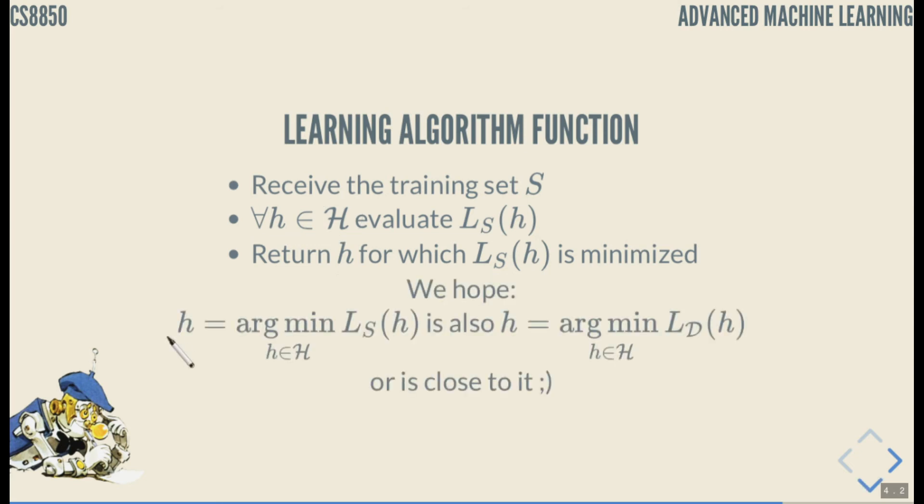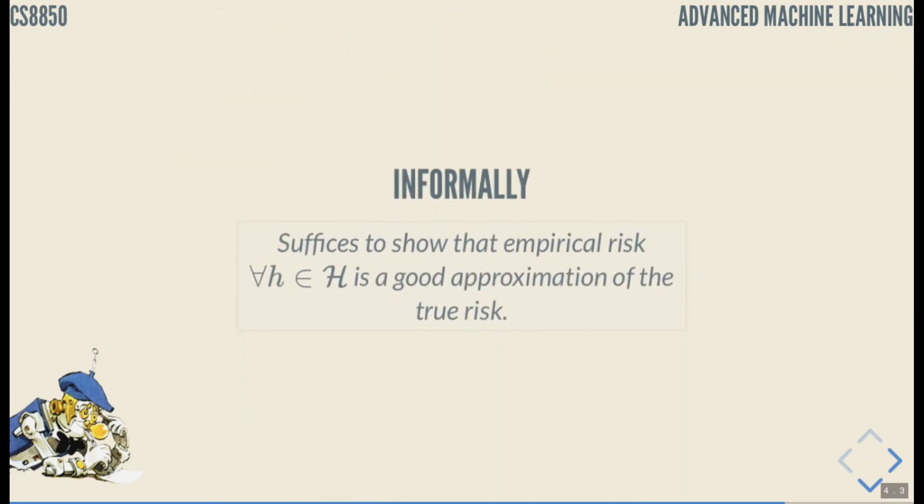And so we hope that our minimizer of the empirical loss is also a minimizer of the true loss or at least it's close to it. Saying the same informally is that it suffices to show that empirical risk for all hypothesis in the finite hypothesis class is a good approximation of the true risk. If we can show that then we know the class is learnable, PAC-learnable.